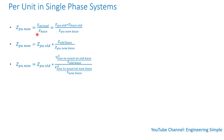If you have a per unit impedance and want to convert it to a new base — for instance, when you buy a transformer — the impedance might be 5%, or 0.05 per unit, but it's calculated on, say, 700 MVA. When you include it in a power system using a 100 MVA base, you have to convert that 5% from the 700 MVA base to the 100 MVA base.